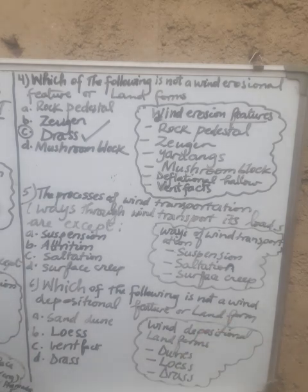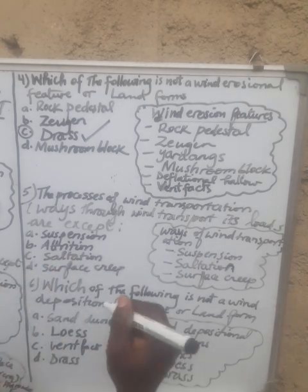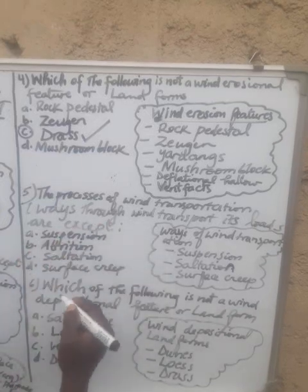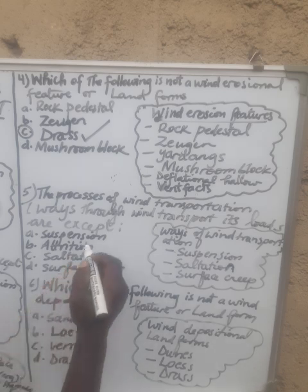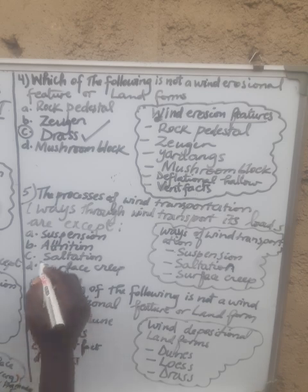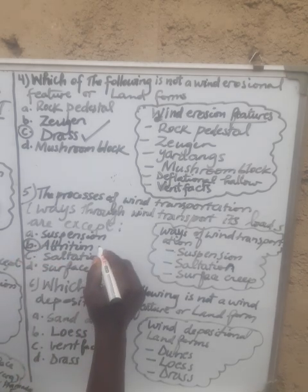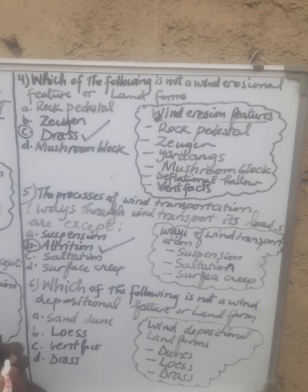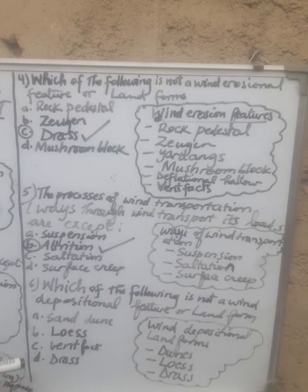The options given are: suspension, attrition, saltation, and surface creep. The correct answer is B — attrition is not a process of wind transportation but a process of wind erosion, as we saw in question number two, where attrition appears as a process of wind erosion.